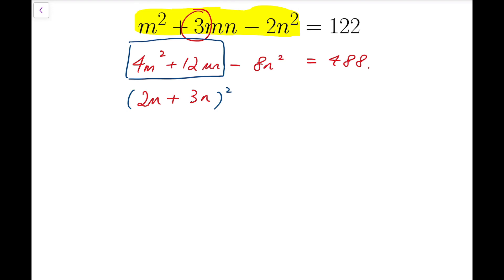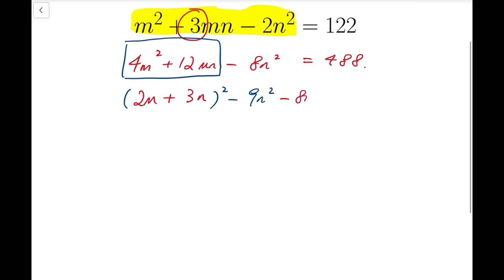And that is actually 9n squared. So for the first two terms, it's equal to 2m plus 3n all squared minus 9n squared, and then of course I have to take care of the third term as well, minus 8n squared, and that's equal to 488. Now simplifying, I have 2m plus 3n all squared minus 17n squared equals 488.